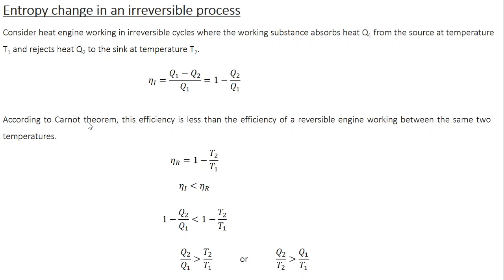From the Carnot theorem, we know that the efficiency of a reversible engine is always greater than the efficiency of an irreversible engine. So the efficiency eta_I is going to be less than the efficiency of a reversible engine, eta_R, working between the same two temperatures. The definition of eta_R is 1 minus T2 divided by T1.